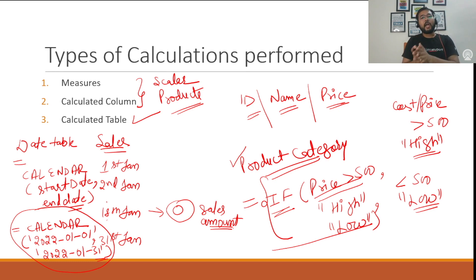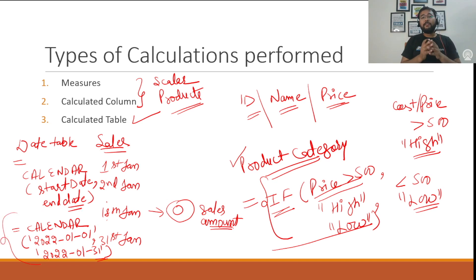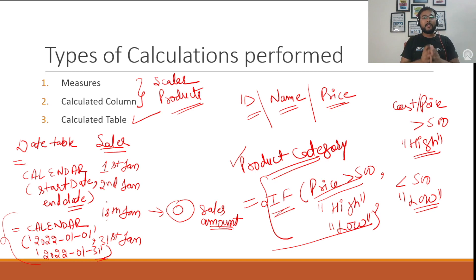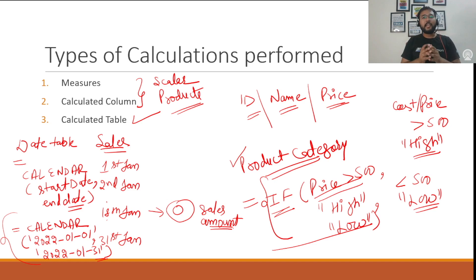So here we have learned how we can use a DAX equation to perform three types of calculations: a measure, a calculated column, and a calculated table. This is all about what is DAX, the various components of a DAX equation, and how we can implement a DAX equation in Power BI. Thank you for watching this video — in the upcoming video we will be performing practical examples using the Power BI desktop application and writing some DAX ourselves. Till then, take care, bye bye.